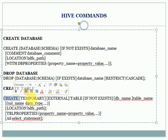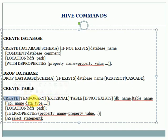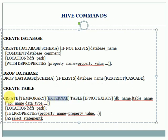For CREATE TABLE, there are three types of tables you can create in Hive. First is the internal table, also called a managed table — if you don't specify TEMPORARY or EXTERNAL, it defaults to a managed internal table. If you specify CREATE TEMPORARY TABLE, that table will be created as a temporary table, available only for the current session and dropped after you disconnect.